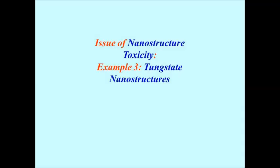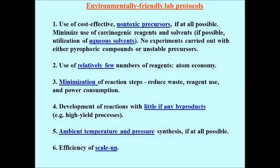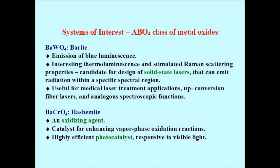The last example is tungstate nanostructures. Our group focuses on making materials with high sample quality, crystallinity, and purity with control over size, shape, and monodispersity. We create structures following green chemistry guidelines: non-toxic precursors, aqueous solvents, little to no byproducts, ambient temperature and pressure with the possibility of scale-up. Similar to making terbium-doped cerium phosphate, we were able to make nanowires of barium tungstate and barium chromate. These are useful for medical lasing applications, while barium chromate is useful for photocatalysis.